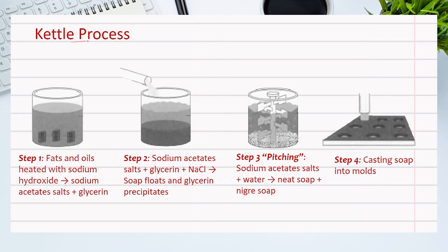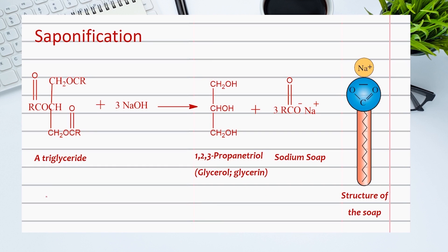In the kettle process, the triglycerides — which are the fats and oils, usually a blend of tallow, which is the cattle solid fats — are melted with coconut oils and steamed. This mixture is heated with sodium hydroxide to promote the hydrolysis of ester groups in the triglycerides, where sodium salts of the carboxylates and glycerin are formed. This process is called saponification.